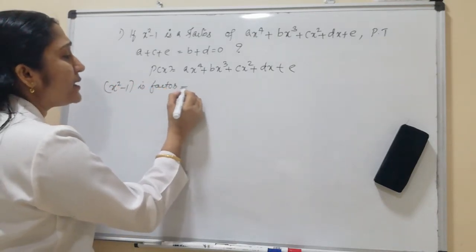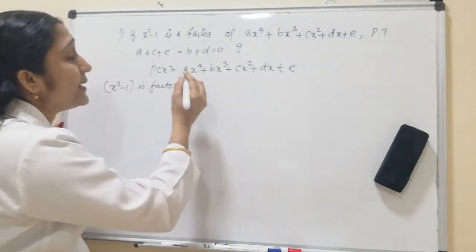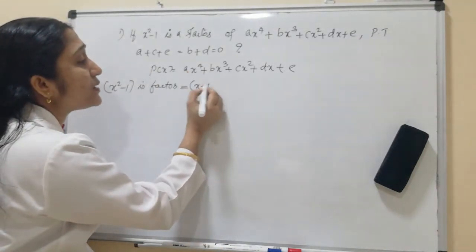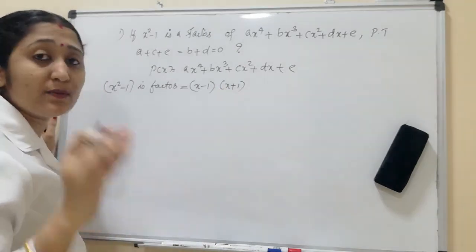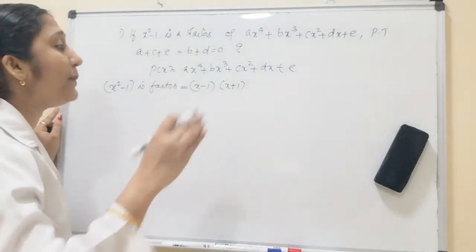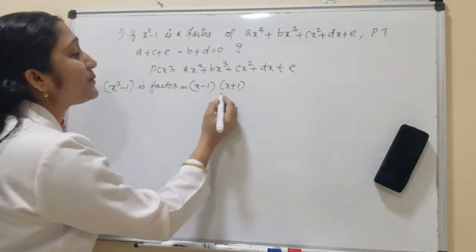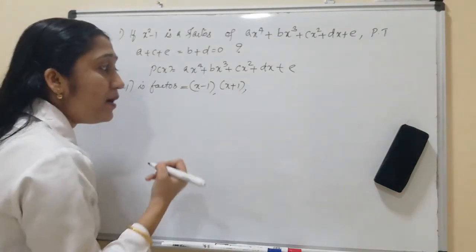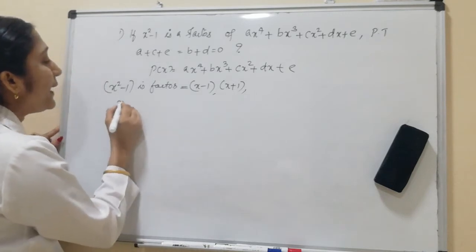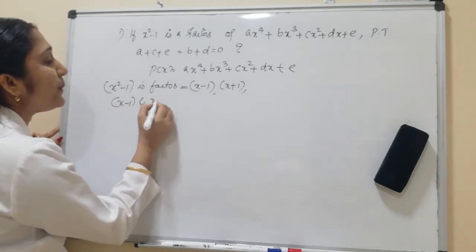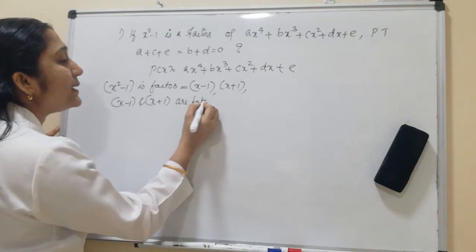Since x² - 1 is a factor, we write x² - 1 = (x - 1)(x + 1), using the identity a² - b² = (a + b)(a - b). So x² - 1 being a factor means both x + 1 and x - 1 are also factors.